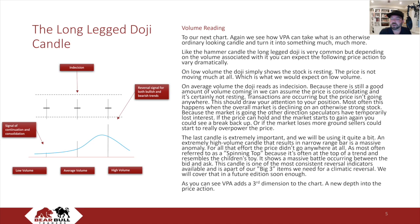Because the market is going the other direction, speculators have temporarily lost interest. If the price can hold and the market starts to gain again, you could see a break back up. Or if the market loses more ground, sellers could start to really overpower the price. The last candle is extremely important, and we will be using it quite a bit. An extremely high volume candle that results in a narrow range bar is a massive anomaly. For all that effort, the price didn't go anywhere at all. As most often referred to as a spinning top — because it's often at the top of a trend and resembles the children's toy — it shows a massive battle occurring between the bid and the ask. This candle is one of the most consistent reversal indicators available and is part of our big three items needed for a climatic reversal. We will cover that in a future edition.